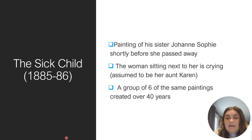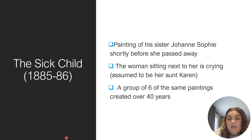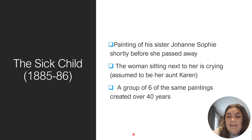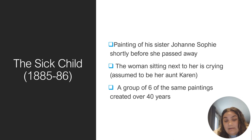The Sick Child was created in 1885 to 1886. It is a painting of his sister Joanne — like I said earlier, one of his favorite sisters — so her death took a great toll on him. It's said that the woman sitting next to her crying is her Aunt Karen. We know it cannot be their mother because she had already passed. It's also said that this is one of six paintings that Edvard created of the same subject over 40 years.